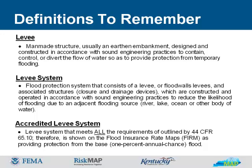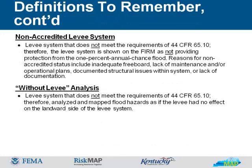An accredited levy system is a levy system that meets all of the requirements outlined by 44 CFR 6510, and therefore is shown on the flood insurance rate maps as providing protection from the base or 1% annual chance flood. A non-accredited levy system does not meet the requirements of 44 CFR 6510, therefore it is shown on the flood insurance rate map as not providing protection from the 1% annual chance flood. Reasons for non-accredited status include inadequate freeboard, lack of maintenance and/or operational plans, and documented structural issues or lack of documentation. The without levy analysis treats the levy as having no effect on the landward side of the levy system.